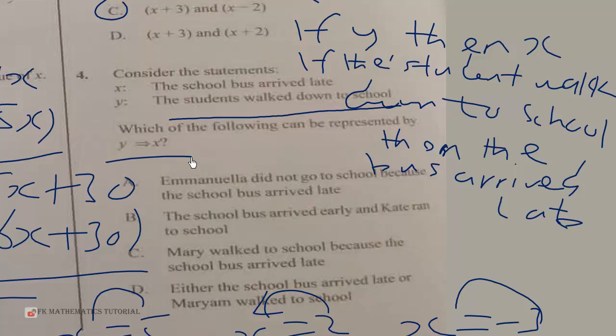One option says Emmanuel did not go to school because the bus arrived late — that's not it. Another says the bus arrived early and Kate ran to school — that's not it either. The correct interpretation is: Mary walked to school because the bus arrived late. So the correct answer is option C.